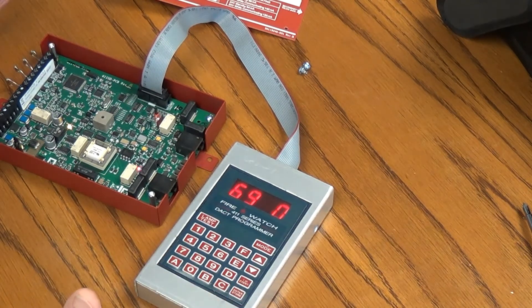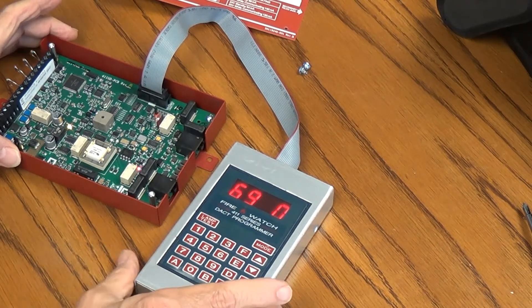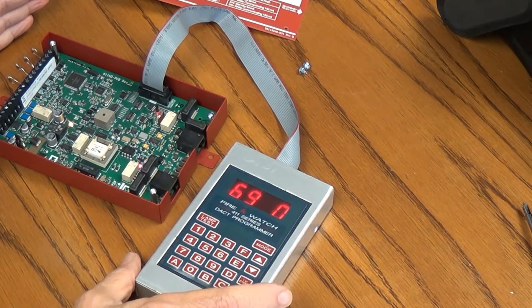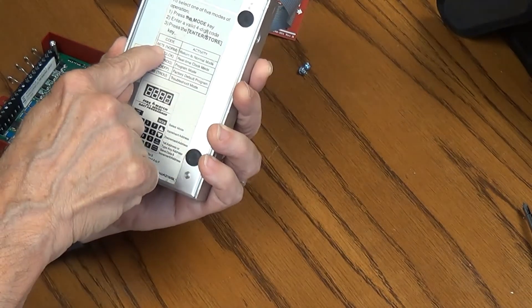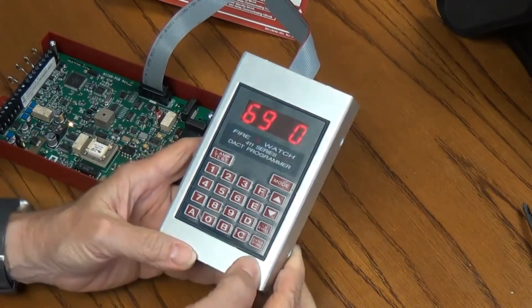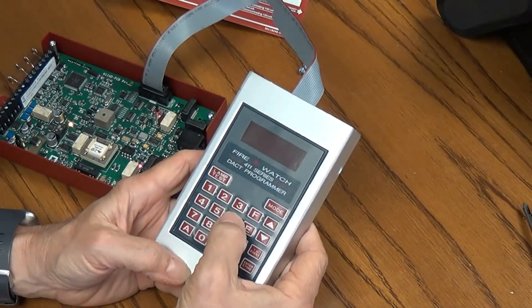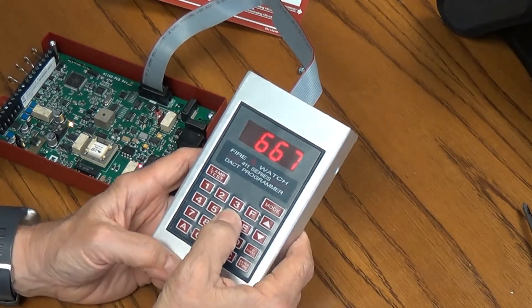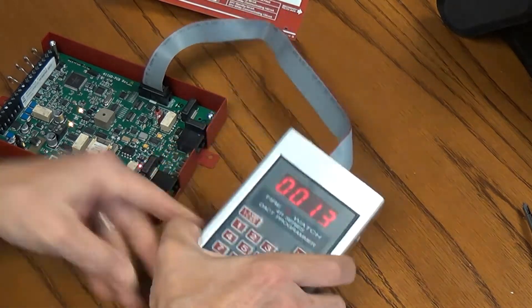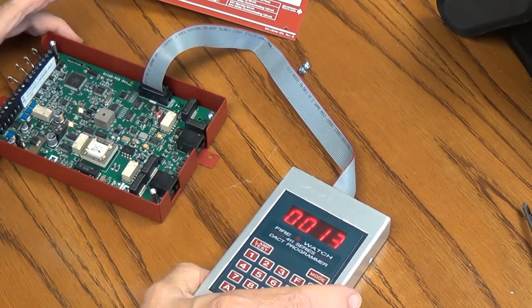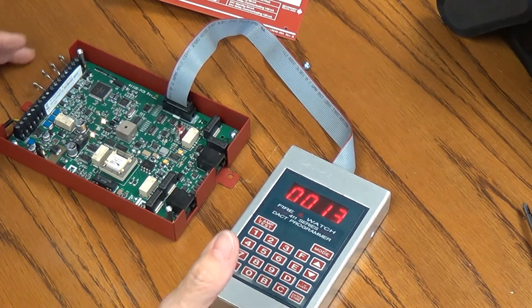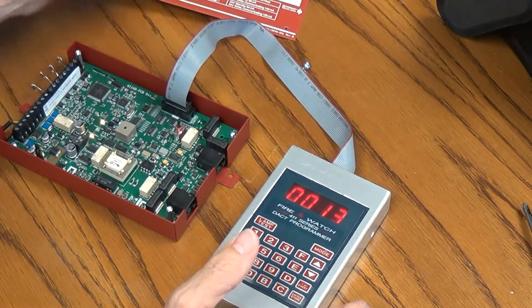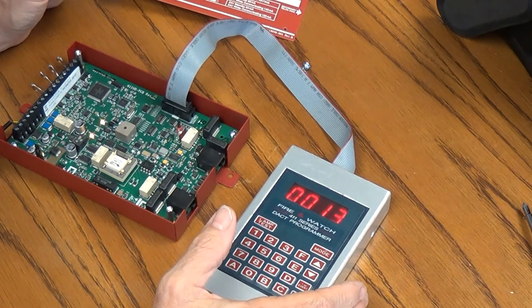Now I am done programming this 411 dialer. So what I'm going to do now is set this back into normal mode. If I look on the back of my programmer, I see norm is 6676. So I'm going to press mode, 6676, and then press enter, silence my alarm, and it is ready to roll. Now I can remove power, unplug it, take my programmer out, button it back up, and I'm ready to take it out to the site.